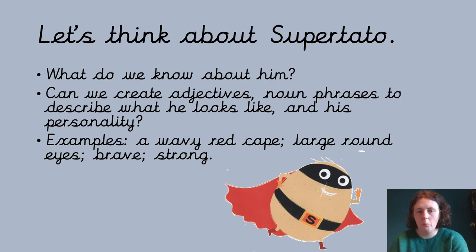So let's have a think about what we've learned about the character, just Supertato, none of the other vegetables, but just about Supertato. What do we know about him so far? Let's see if you can think of some adjectives, remember they're describing words, and some noun phrases to describe what he looks like and his personality. So there is a picture of him on there, but remember you can use the whole story. We're not just describing this one picture. What kind of things can you think of?